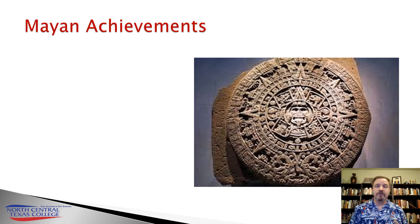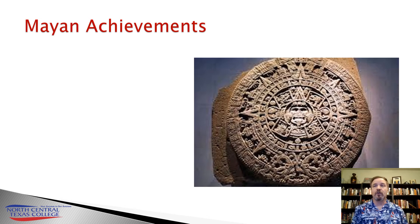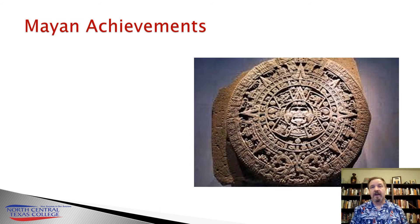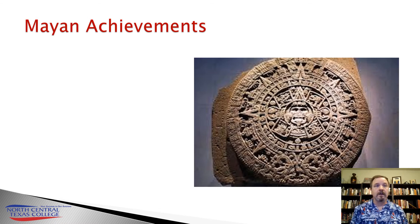The Mayans also wrote on a type of paper made out of bark. Unfortunately, the books written by the Mayans were mostly destroyed by the Spanish conquistadors, who saw the Mayan written language as sacrilege. Only four of these books survive. Fortunately, these four books all contain texts on astronomy and on the calendar.